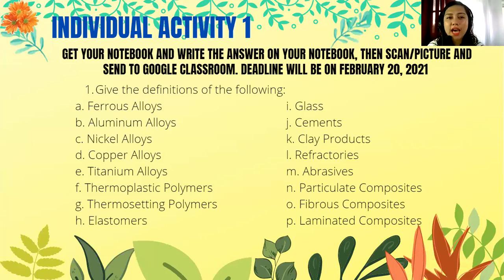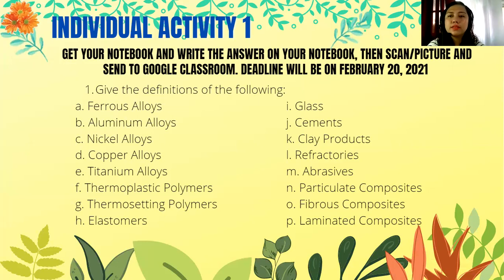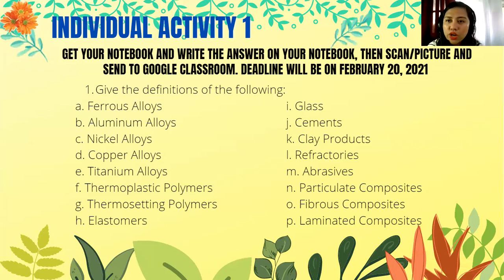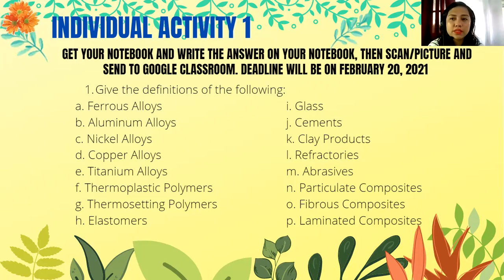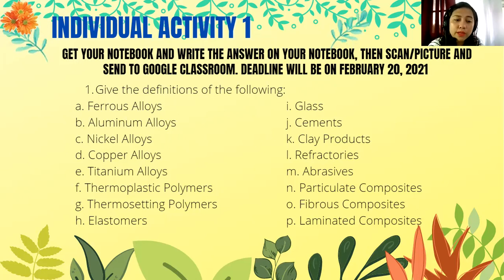That was a short discussion with some definitions. Now, for your individual activity — since you've seen and learned about engineering materials — get your notebook and write your answers, then scan or photograph your answers and send them to Google Classroom. The deadline is February 20, 2021, Saturday. Give the definitions of: ferrous alloys, aluminum alloys, nickel alloys, copper alloys, and titanium alloys under metals; and thermoplastic polymers, thermosetting polymers, and elastomers under polymers.